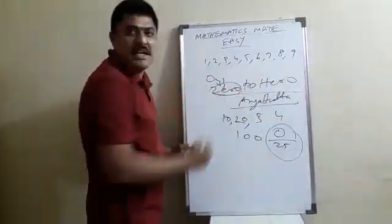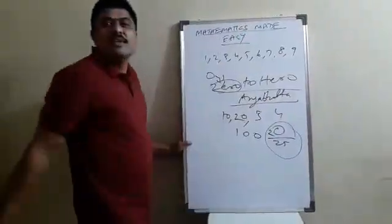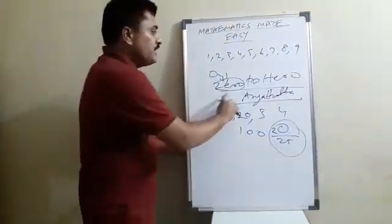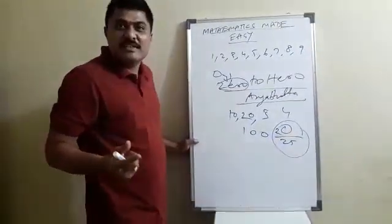Now, to make hero. So, bring the numbers. Left side of 0. If you bring 2, then you are becoming 0 to hero. Is it clear, my dear students?